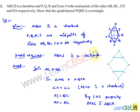When two triangles are congruent, the corresponding sides and corresponding angles can be equated. So here we equate PS is equal to QR.